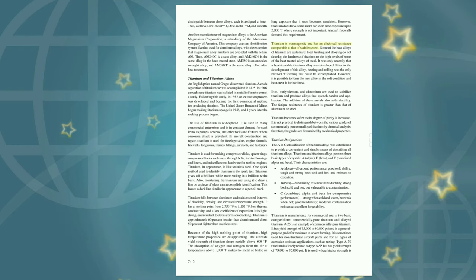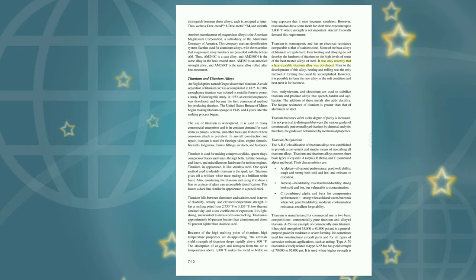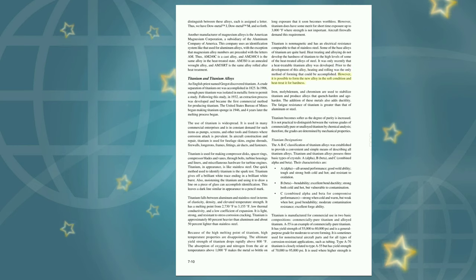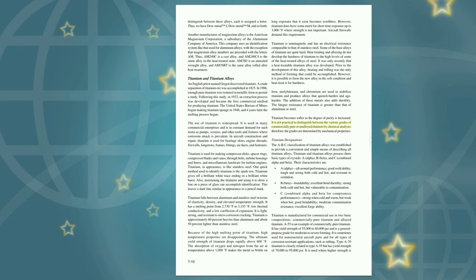Titanium is non-magnetic and has an electrical resistance comparable to that of stainless steel. Heat-treating and alloying do not develop the hardness of titanium to the high levels of some heat-treated alloys of steel. It is now possible to form a heat-treatable titanium alloy in the soft condition and heat-treat it for hardness. Iron, molybdenum, and chromium are used to stabilize titanium and produce alloys that quench-harden and age-harden; the addition of these metals also adds ductility. The fatigue resistance of titanium is greater than that of aluminum or steel. Titanium becomes softer as the degree of purity is increased. The grades are determined by mechanical properties since it is not practical to distinguish between the various grades of commercially pure titanium by chemical analysis.